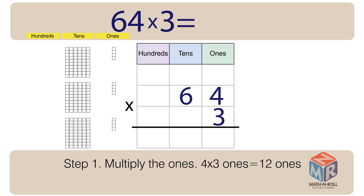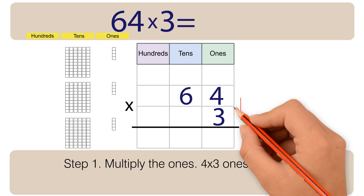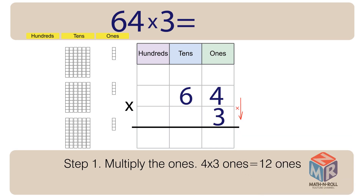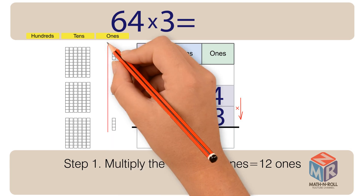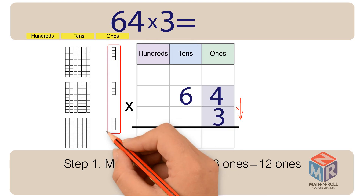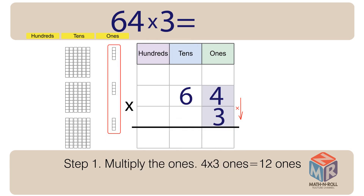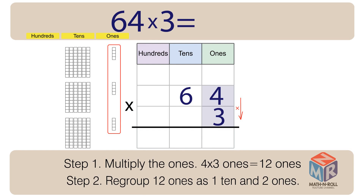Step 1: Multiply the ones. 4 times 3 ones is equal to 12 ones. Step 2: Regroup 12 ones as 1 ten and 2 ones.